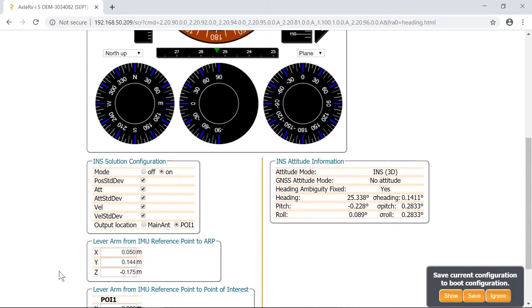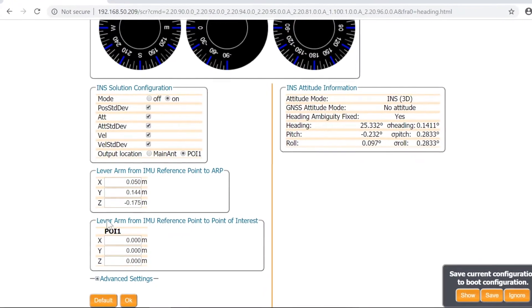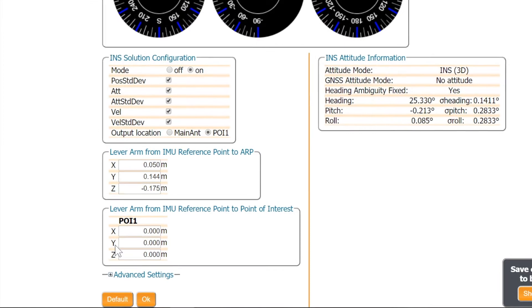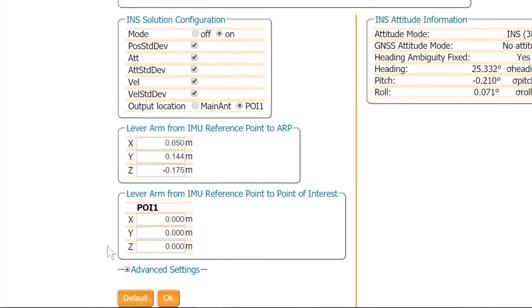In some cases you might want the navigator to compute the position of your user defined point of interest. In this case you can enter the X, Y and Z offset values from the IMU reference point to the point of interest.